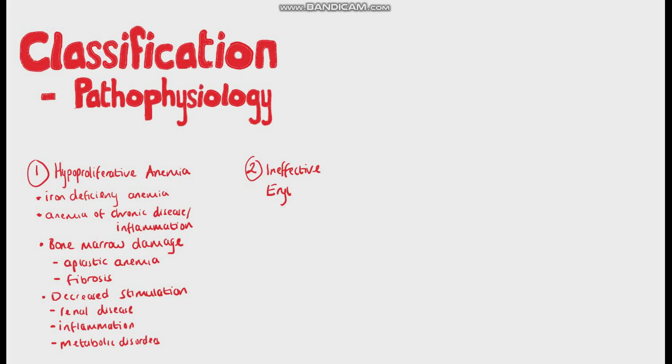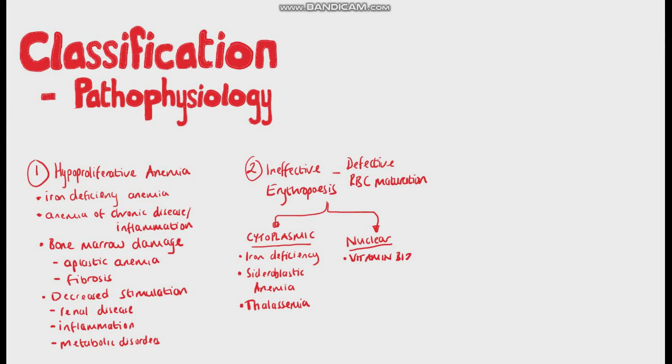Ineffective erythropoiesis means that the bone marrow may be working correctly, but some external factor is limiting the production of red blood cells, so think of it more as a problem in the maturation of the red blood cells rather than the production. We can split these into cytoplasmic and nuclear issues, cytoplasmic issues being seen in iron deficiency anemia, sideroblastic anemia, and thalassemia, while in nuclear issues we have folate and vitamin B12 deficiency.